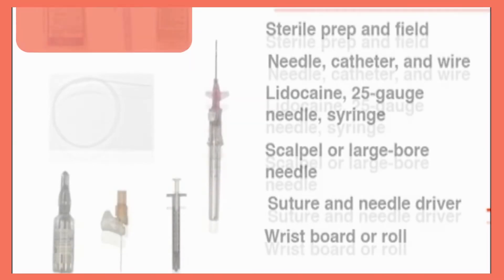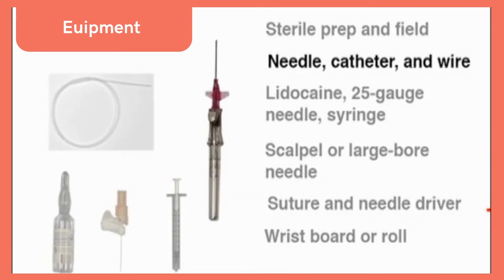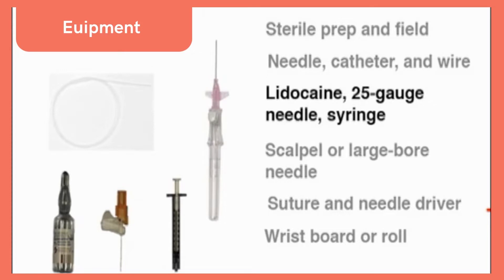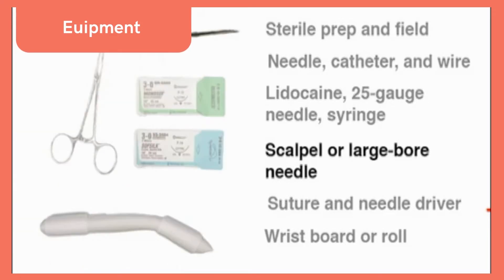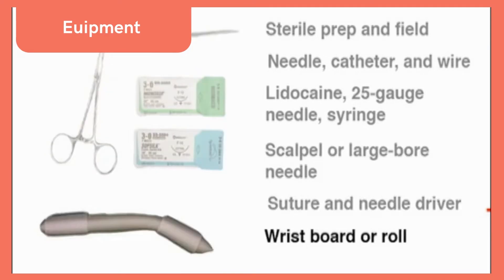For both procedures, similar equipment will be used: material for a sterile prep and a sterile field, a needle, catheter and wire, 1% lidocaine, a 25-gauge needle and 1cc syringe, a larger bore needle or scalpel, suture and needle driver, and a wrist board or roll.